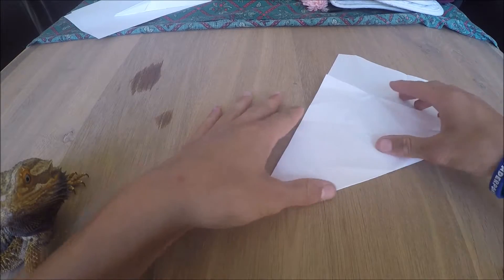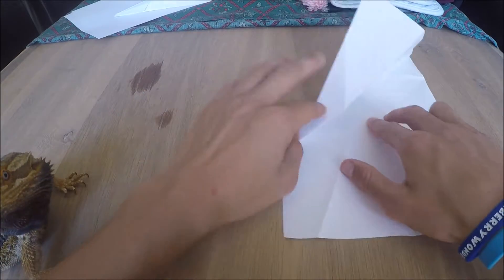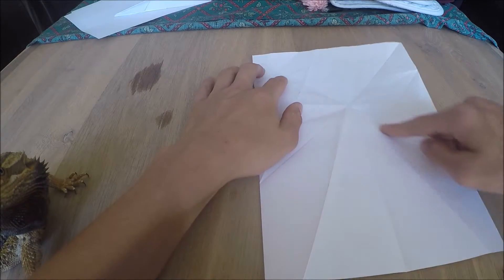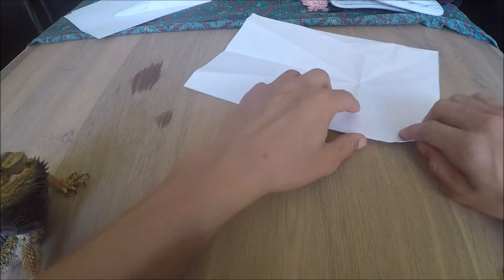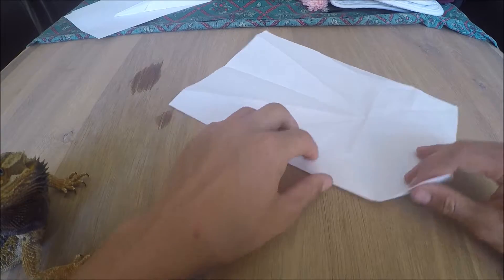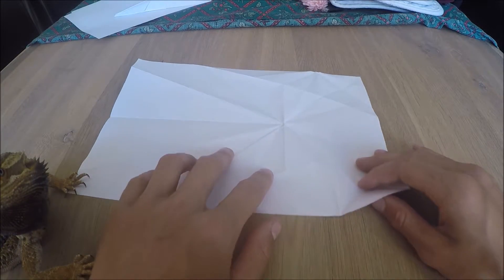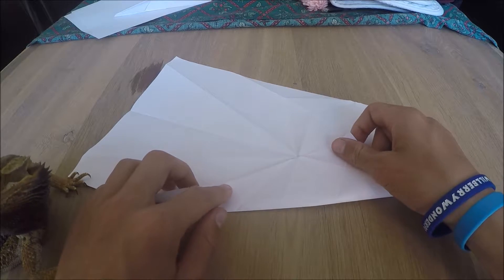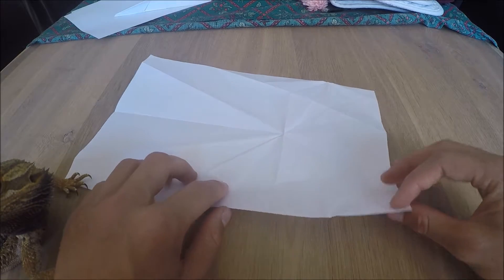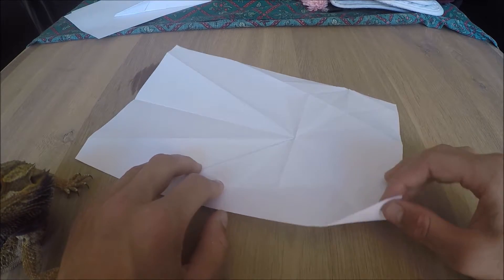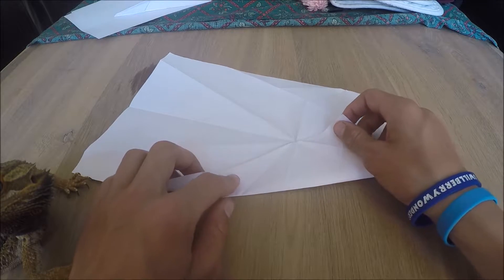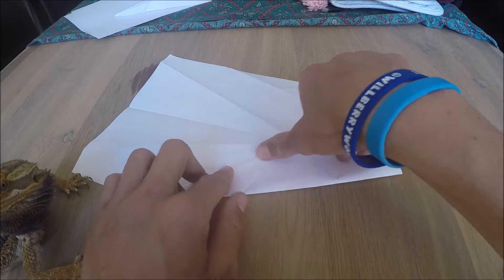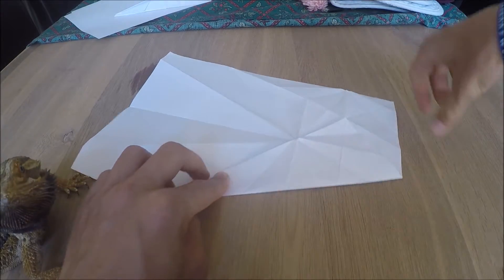After you've done this, you'll find you have a line going across here and another line going across here. What you need to do is get this corner of the paper and run it across the line you just made from making the triangle. Run it straight across so it's parallel, and then push the crease down.